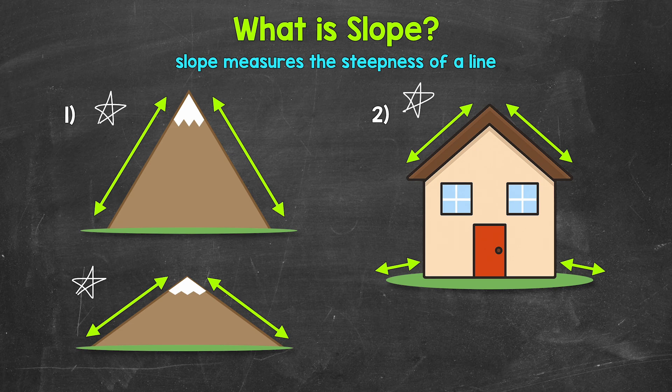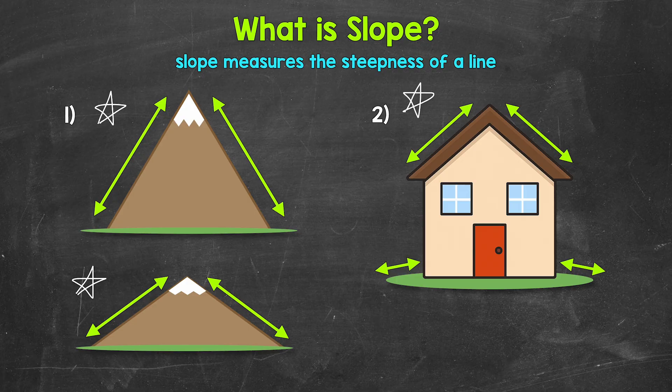Keep in mind, we can have more gentle inclines or declines or more steep inclines or declines. Slope helps us measure this. Slope helps us put a number on steepness. Let's move on to our next examples where we are going to find the slopes of lines on a graph.